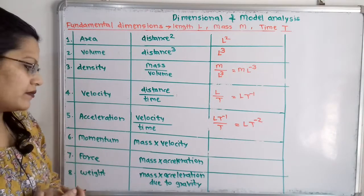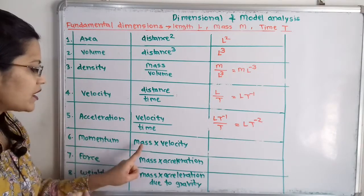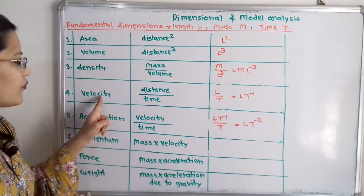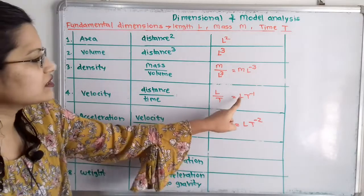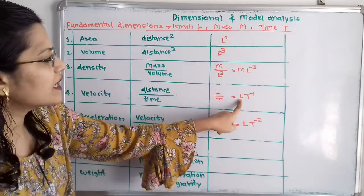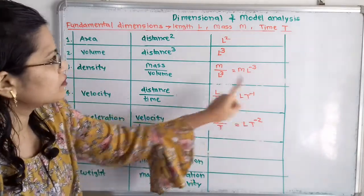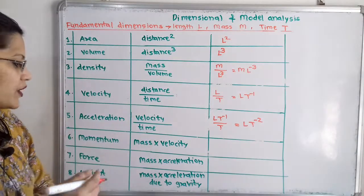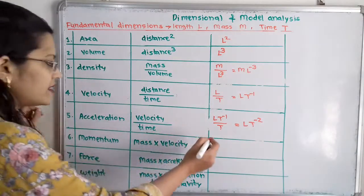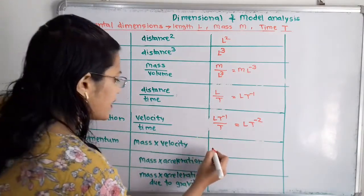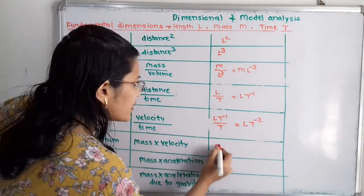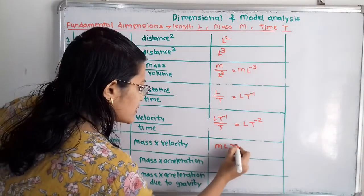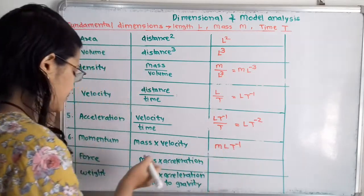Then momentum. Momentum is mass into velocity. For velocity it is L into T raised to minus 1, multiplied by mass M. So I will write here M into L into T raised to minus 1.